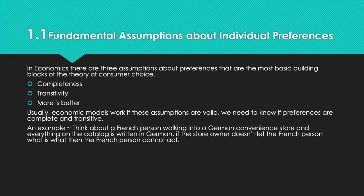Chapter 1 starts off with Section 1.1, which covers fundamental assumptions about individual preferences. In economics, there are three major assumptions that are the most basic building blocks of the theory of consumer choice: number one, completeness; number two, transitivity; and number three, more is better. Economic models work when all these assumptions are valid.